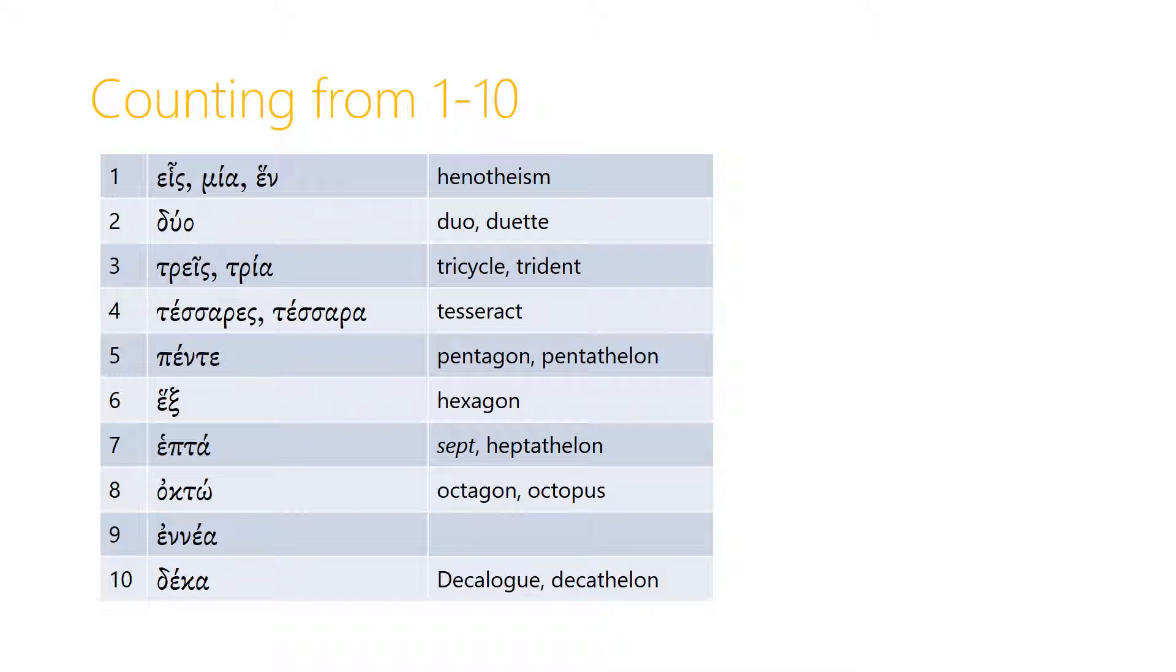Number one has three forms depending on the gender. Masculine is heis, mia is feminine, and hen is neuter. And we get the word henotheism, which you might have heard,